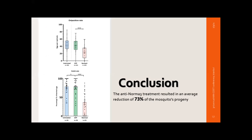In conclusion, our treatment against the long non-coding RNA NORMA3 resulted in an average reduction of 73% by combining the two phenotypic assays — oviposition and hatching — in the final mosquito progeny.